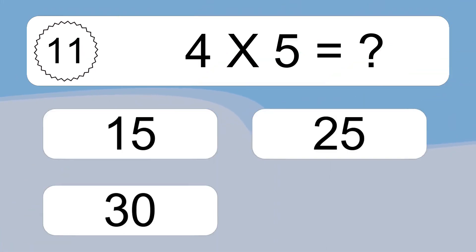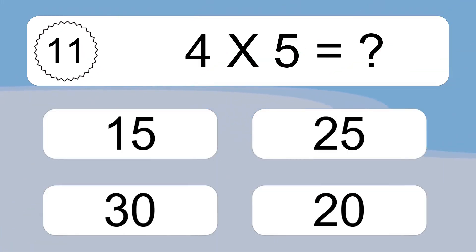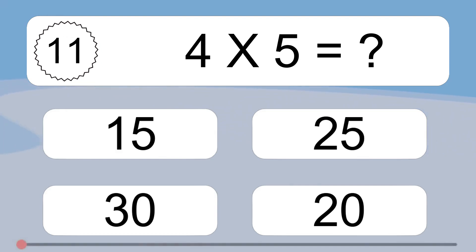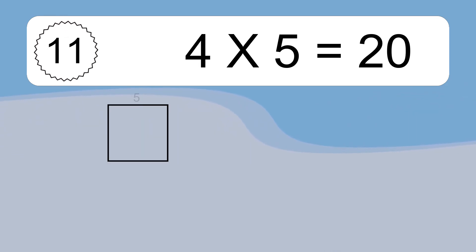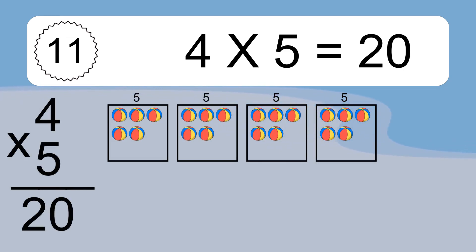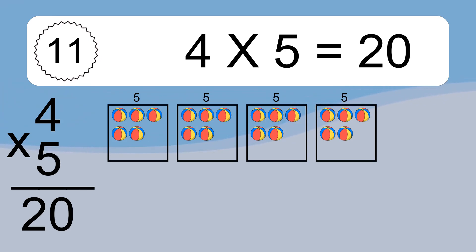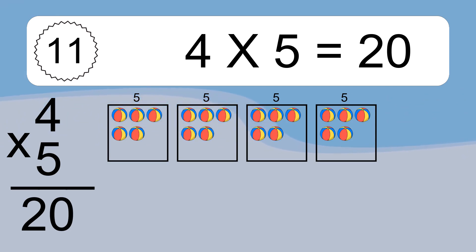4 x 5 equals what? 4 x 5 equals 20. We have 4 boxes, and each box has 5 colorful balls inside. If you count all the balls in all the boxes together, you will have 4 x 5 balls. This equals 20 balls.